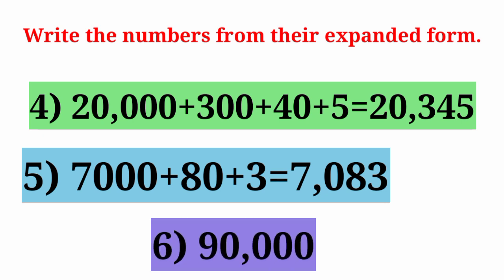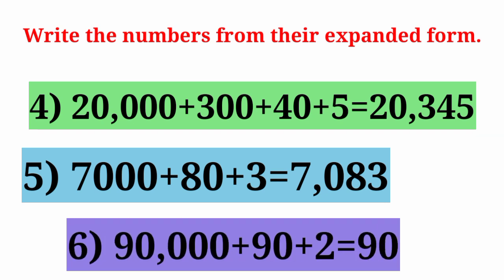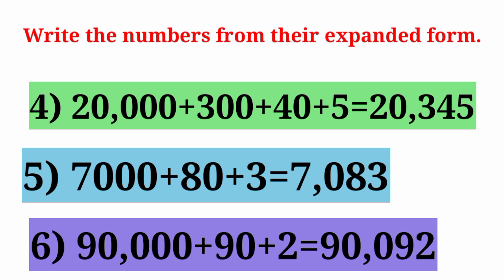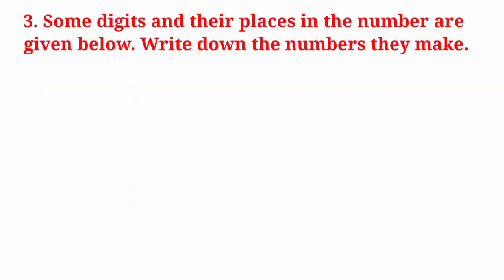Next expanded form: 90,000 plus 90 plus 2. Number will be 90,092. Some digits and their places in the number are given below. Write down the numbers they make.